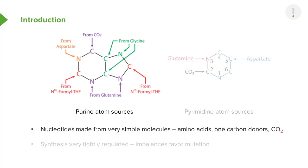When we look at the pyrimidines, it's even simpler. Only three components are necessary to make the ring of a pyrimidine: carbon dioxide, glutamine, and aspartic acid — the same three components also used to make purines. So making nucleotides requires very simple precursors; it's not a difficult process to understand.